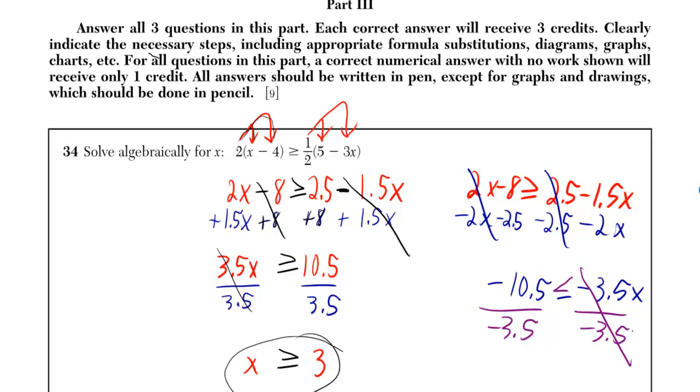Now the negative 3.5s cancel, and now the negatives cancel, and now I get 3 is less than or equal to x. In other words, x is greater than or equal to 3. So that's the same answer, but you've got to make sure you switch the sign whenever you divide by a negative, or multiply by a negative for that matter.